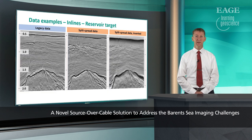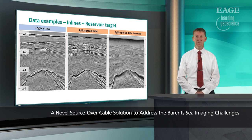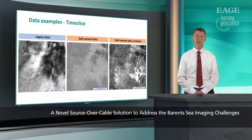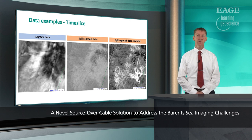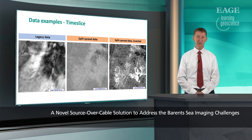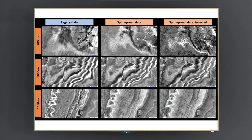Here are data examples across the target zone showing the legacy data, the new source-over-cable data in the middle, and the inverted 3D data on the right. Here is a time slice at approximately 700 milliseconds depth, where you again see the legacy data on the left and the two new datasets to the right — a remarkable uplift in clarity, low-frequency content, signal-to-noise ratio, and spatial sampling. These additional time slices cover both shallow and deeper levels, and the three at the bottom show exactly through the target levels, with dramatic improvement everywhere.